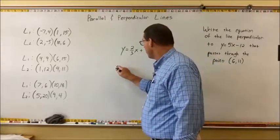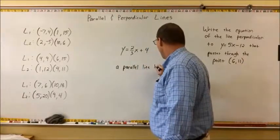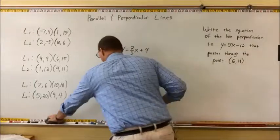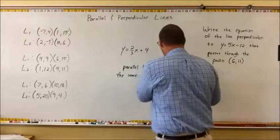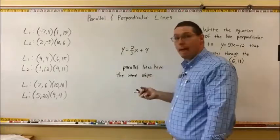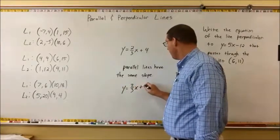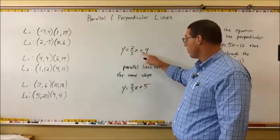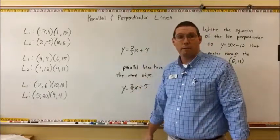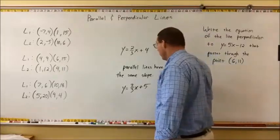Parallel lines have the same slope — that just means they have the same m value in their formula. So the equation y equals two-thirds x plus five is different than this one: this one has a y-intercept of four, this one has a y-intercept of five, but they both have a slope of two-thirds, and therefore they are parallel lines. Two lines are parallel if they have the same slope.